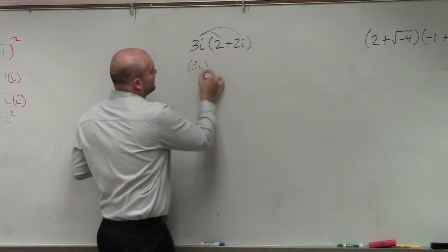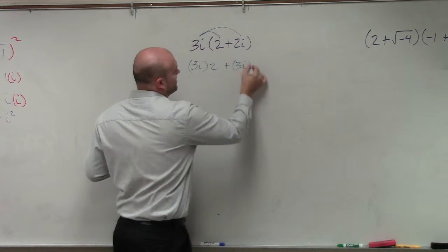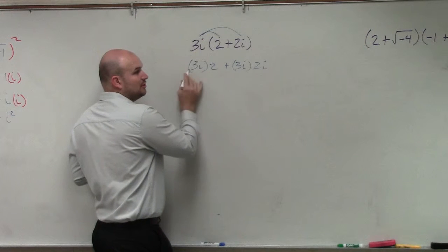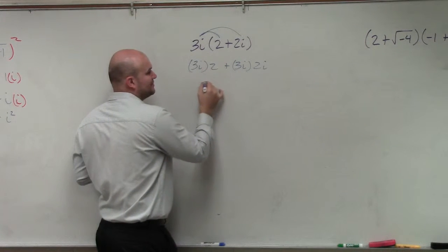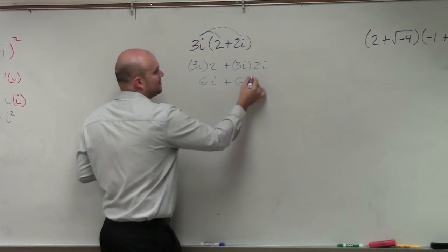So basically, you have 3i times 2 plus 3i times 2i. Well, 3i times 2, you can only multiply your real numbers, so that's 6i. And then 3 times 2 is 6 times i squared.